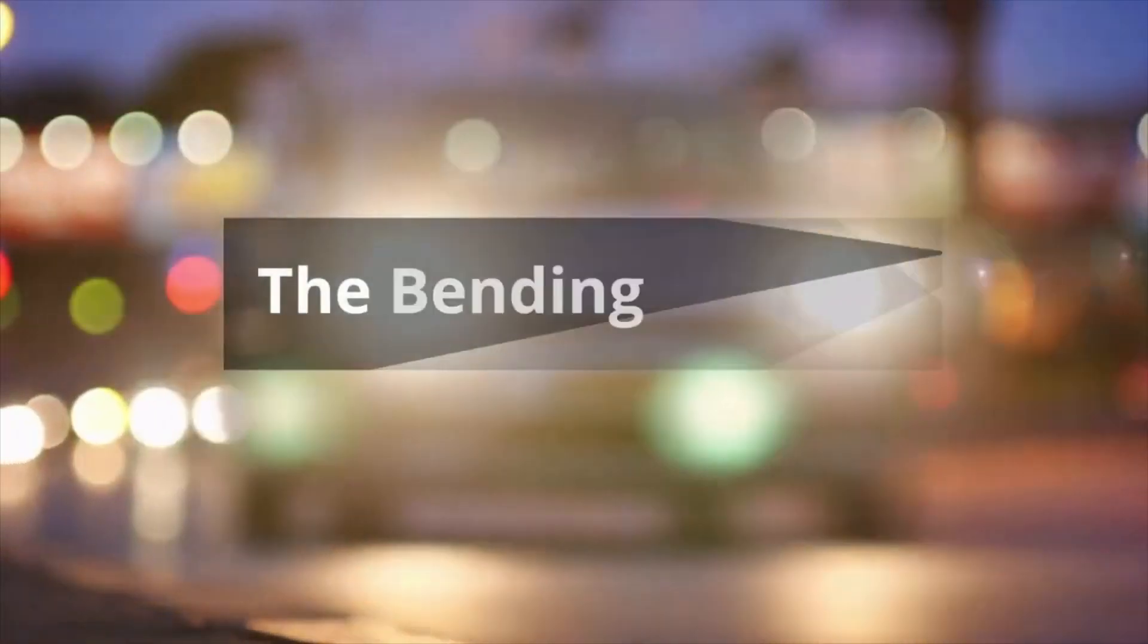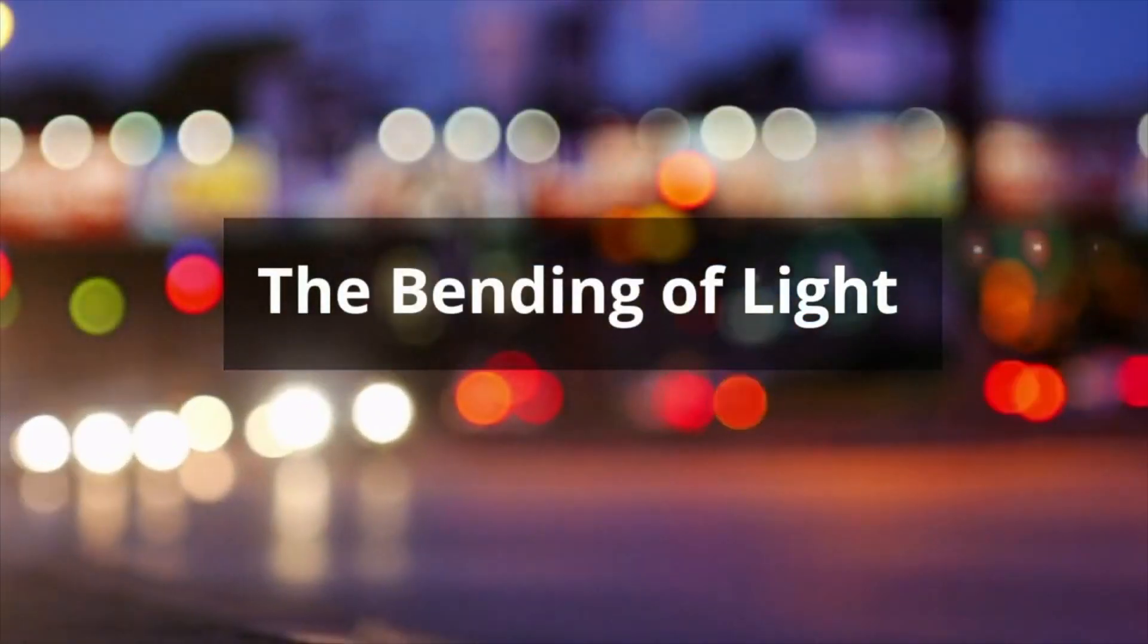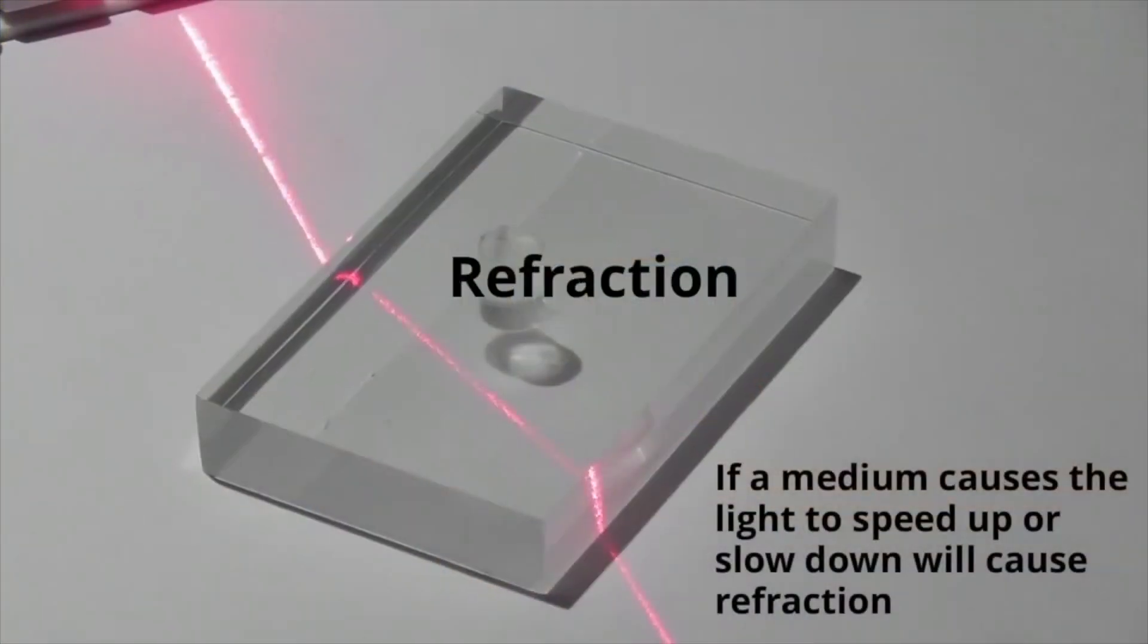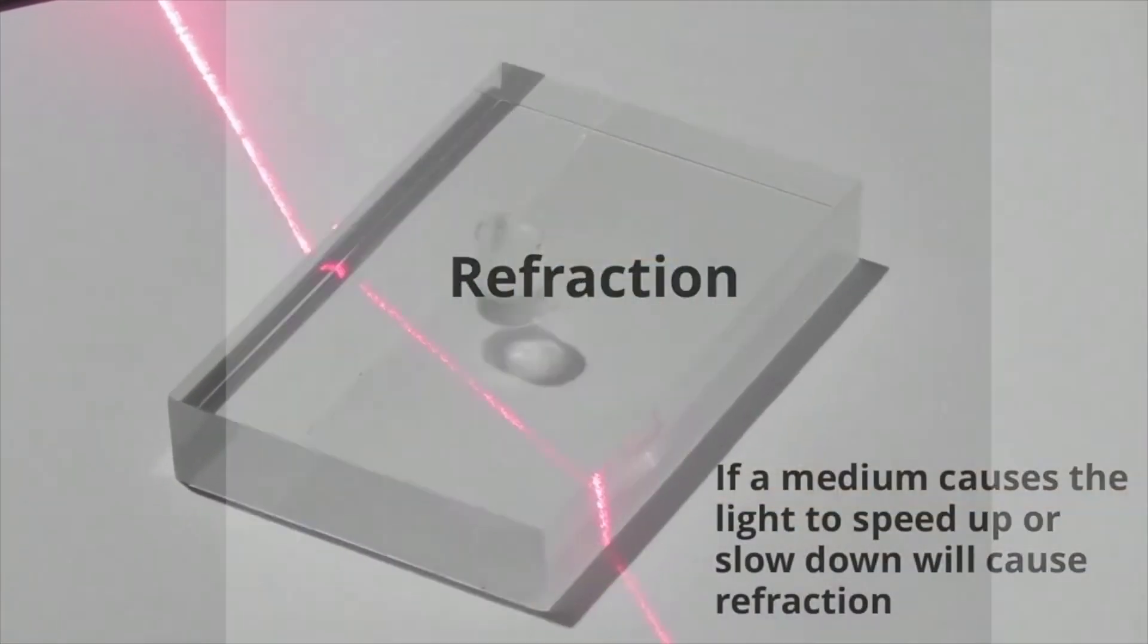So, in summary, refraction and diffraction is the bending of light due to either slowing down or going around an object.